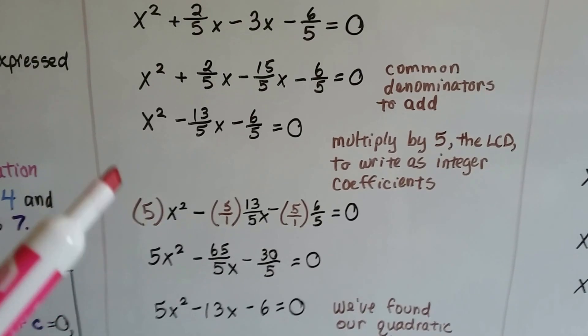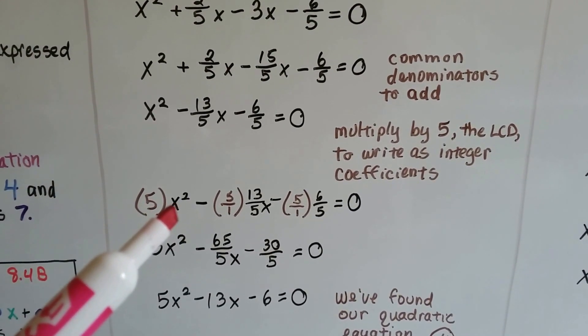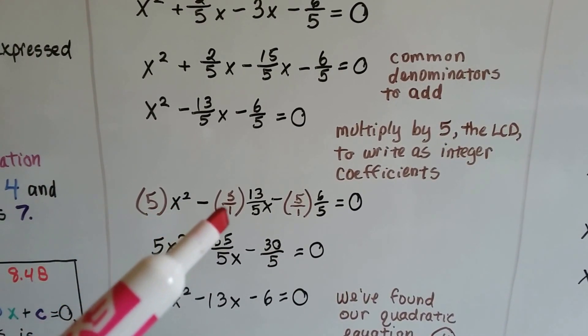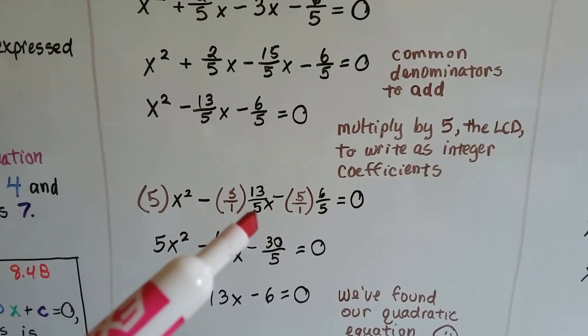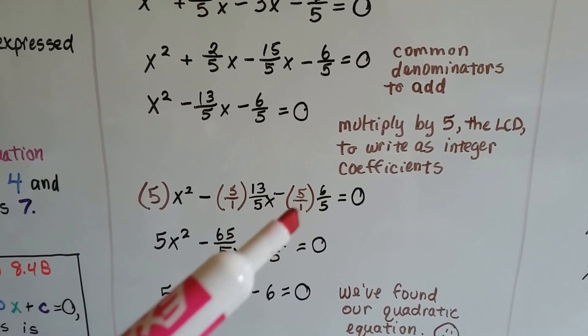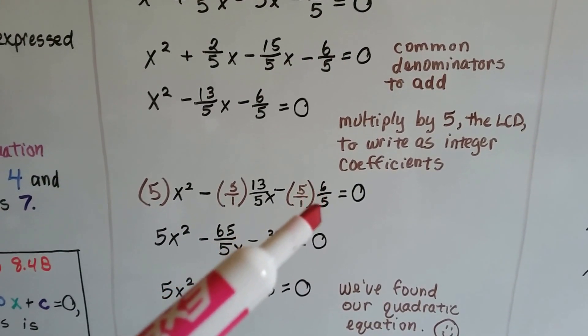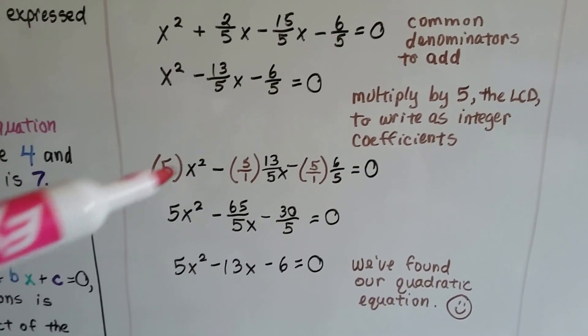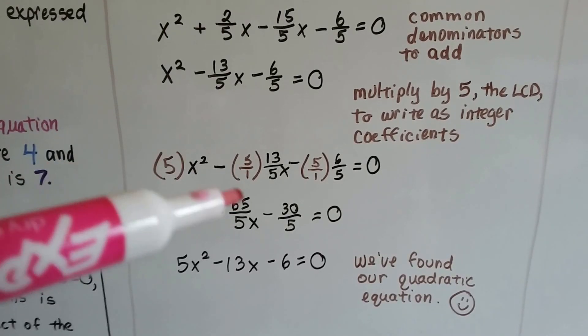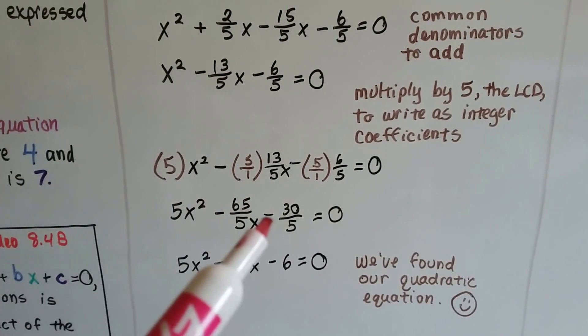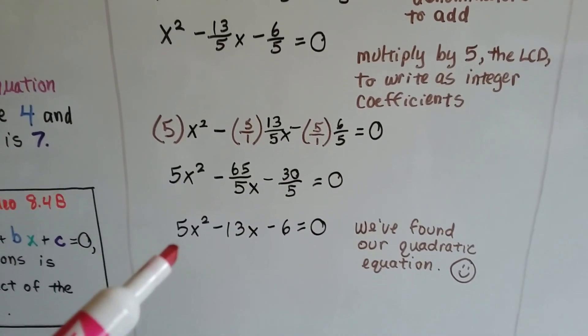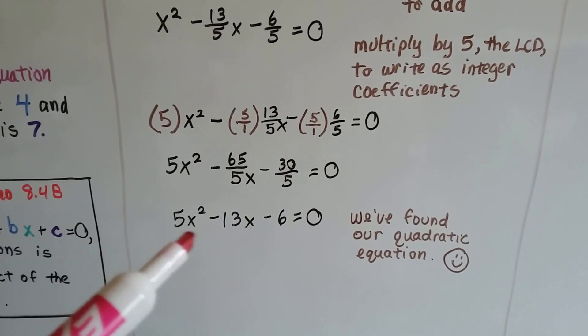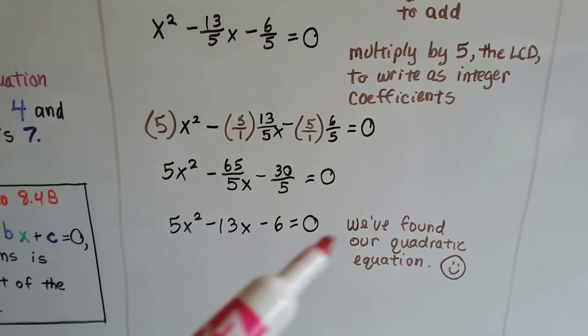We get 5·x² - (5/1)·(13/5)x - (5/1)·(6/5). When we do our multiplication, we get -65/5 x and -30/5, which can be simplified as 5x² - 13x - 6 = 0.